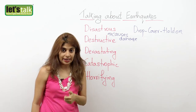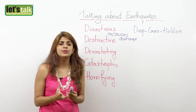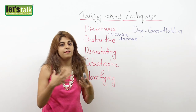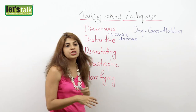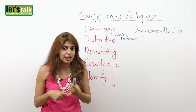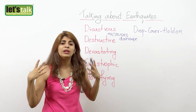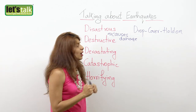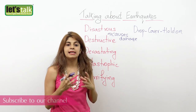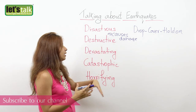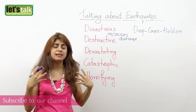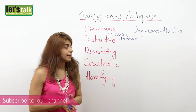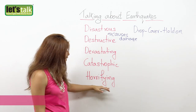The next word is devastating. You can use this when talking about the event of an earthquake — if an earthquake occurs, everything is going to be devastating because people get injured and people die, and the whole area looks awful. The next word is catastrophic, which is very similar to devastating. When something is damaged or an area is completely destroyed, we can say the area is catastrophic.